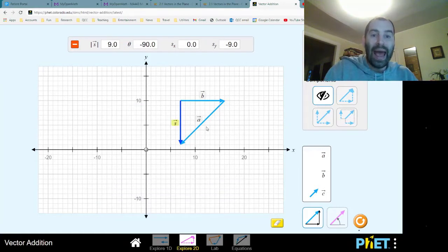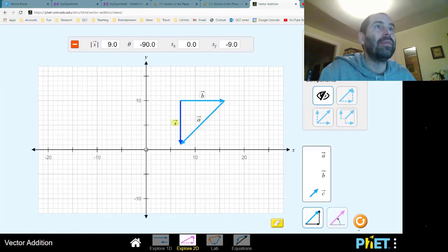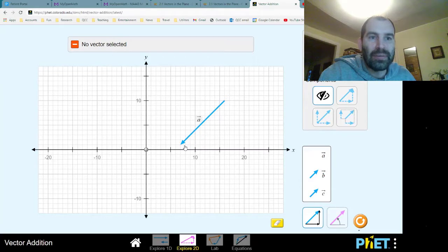So we can add vectors. That's how we do it. Next thing I want to talk about is what's called scalar multiplication. Scalar multiplication is what happens when we multiply a vector by a number.